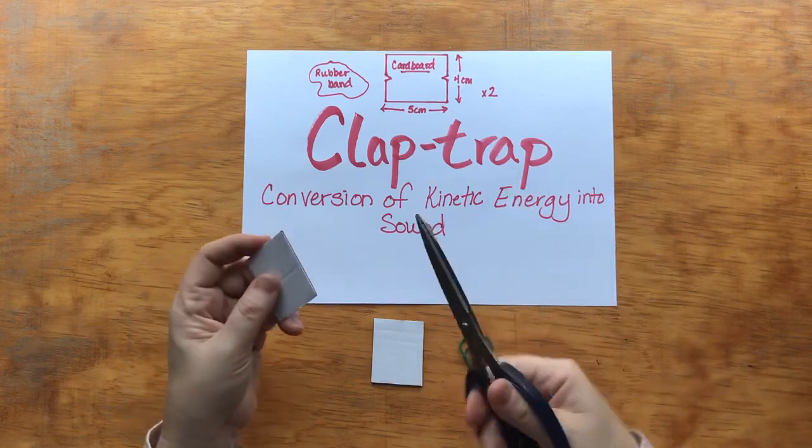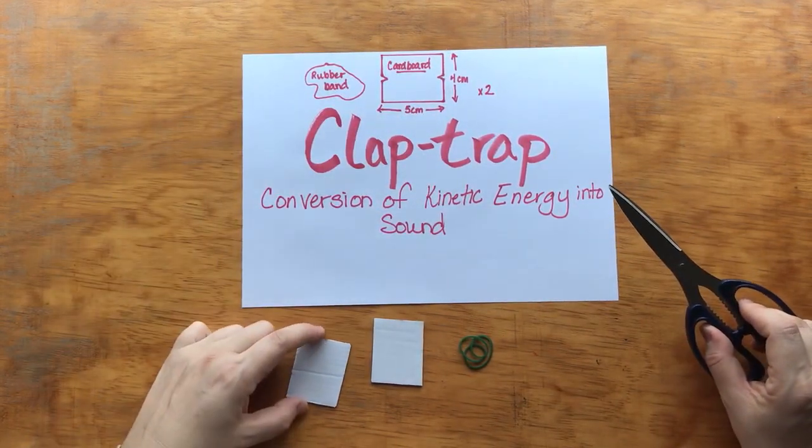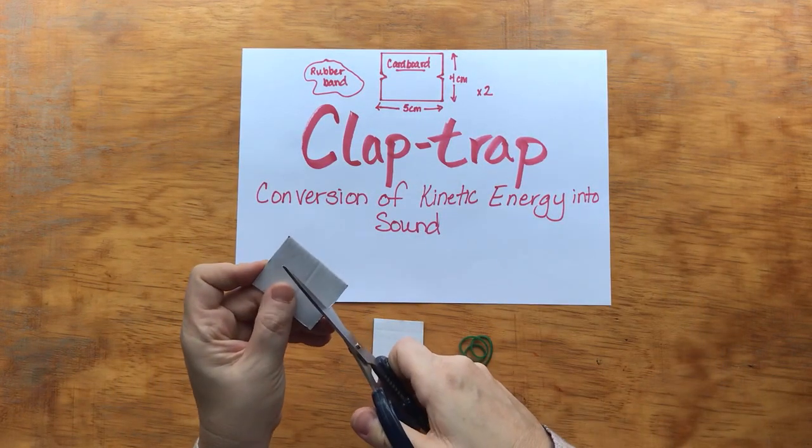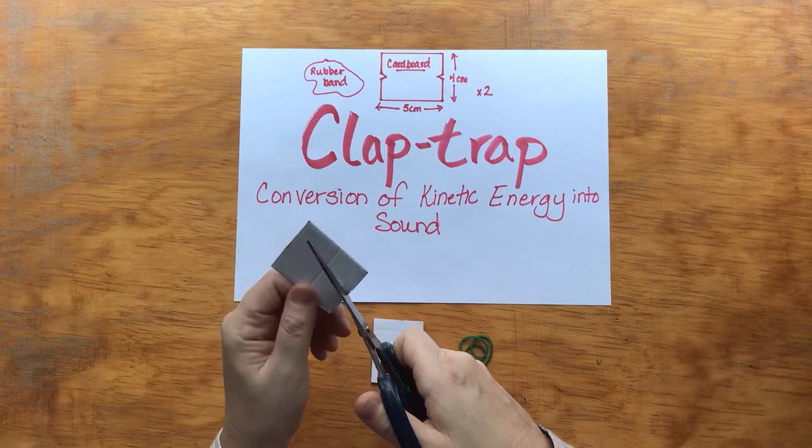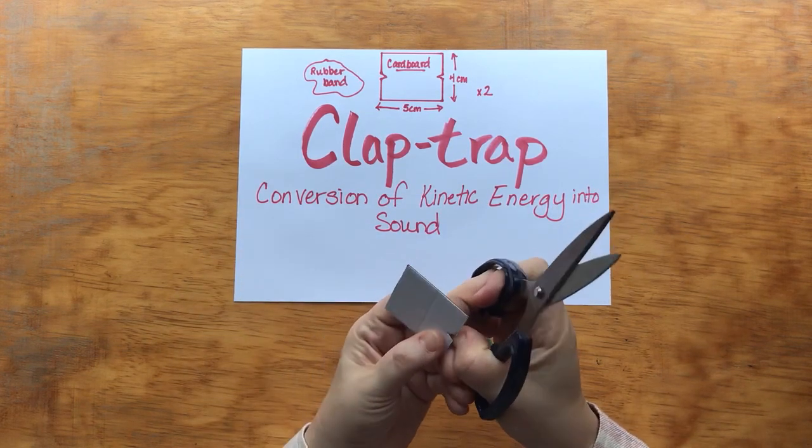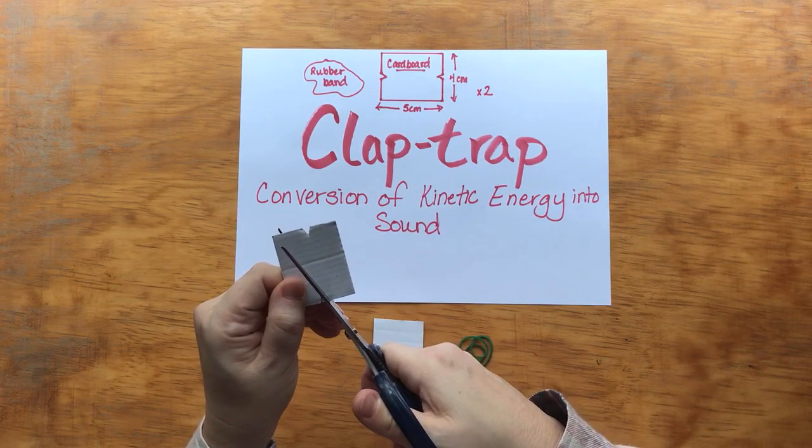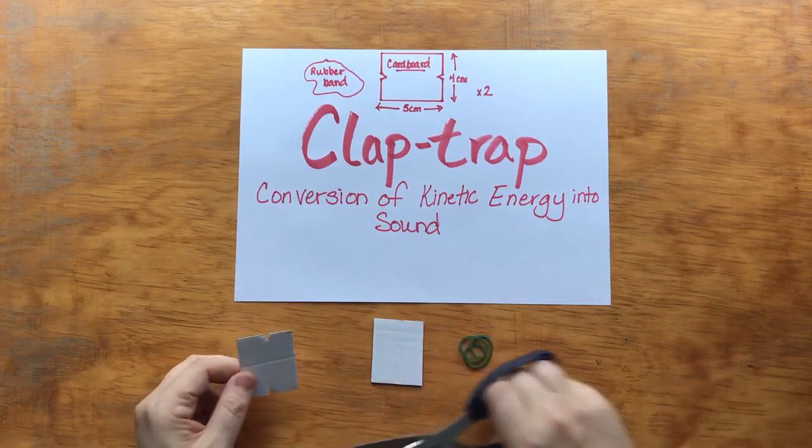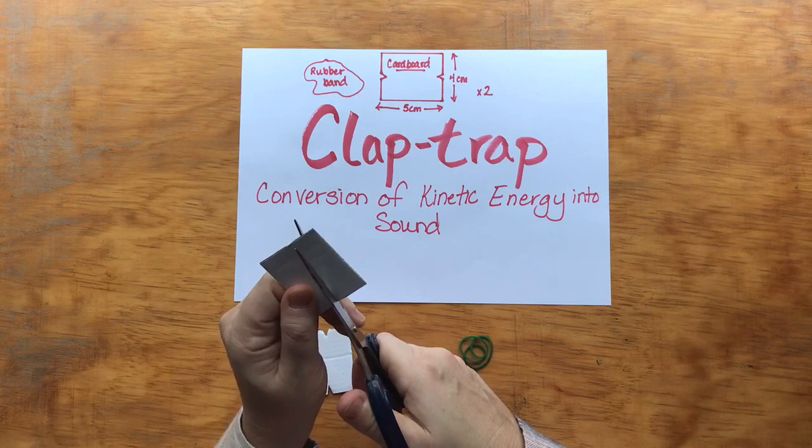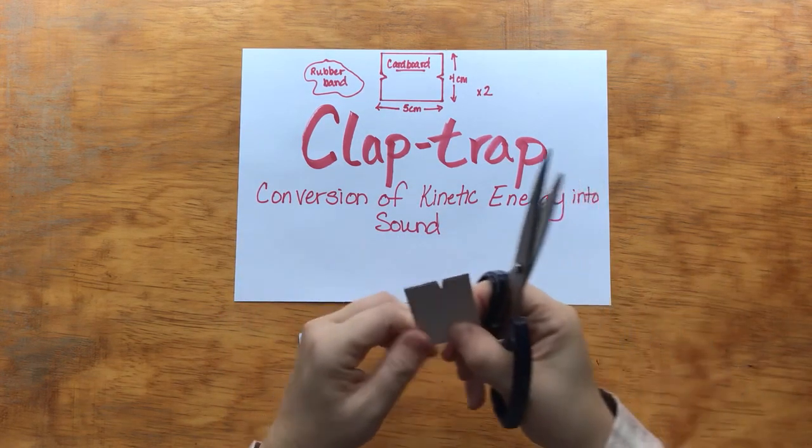So what you're going to do is you're going to as I've indicated here in the cardboard kind of in the middle of the shorter side you're going to cut two notches in there like that and again depending on the age of the children doing this activity you may need to assist them with this if their scissor skills are not quite where they need to be.